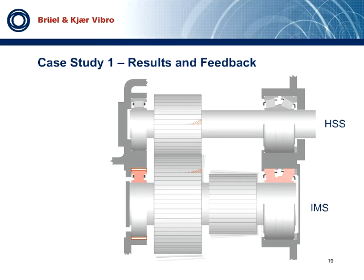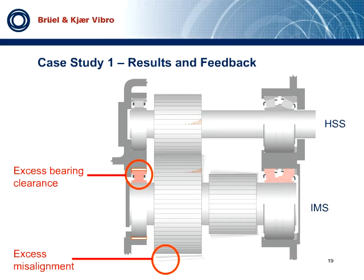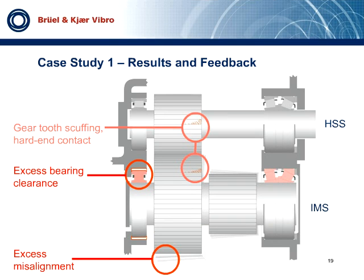The excessive clearance in the IMS rotor side bearing can lead to damage of many components. It will create misalignment, and can also lead to hard-end contact and scuffing marks on the generator side of the meshing gears. Additionally, there will be damage on IMS generator side bearings — mostly raceway defects. It could also lead to abnormal operation of the mechanical oil pump, which is coupled directly to the high speed shaft.